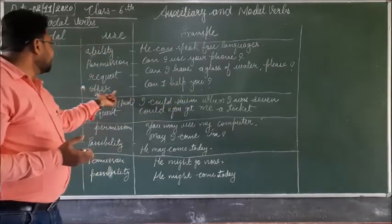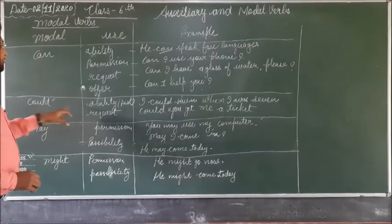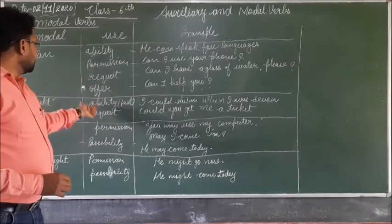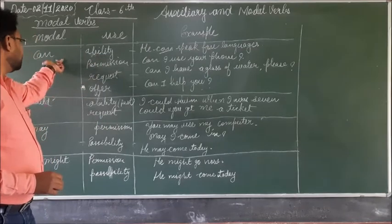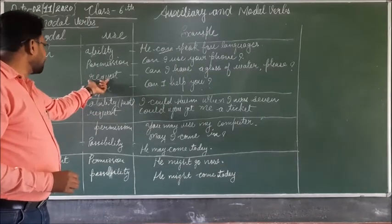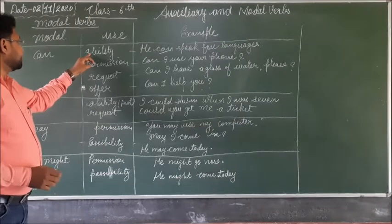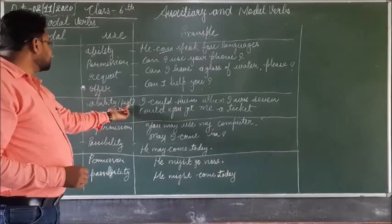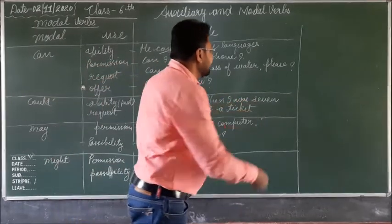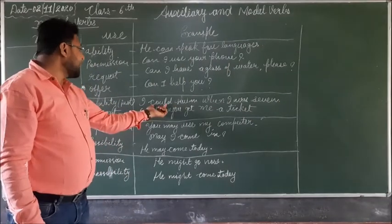Can is also used to express an offer. Here, 'could' is the past form of 'can'. To express past ability, could is used. In requests also, could is used. Can is used to express ability, and could is also used to express ability. To express the ability of the past, we use could — for example, 'I could swim when I was 7.'